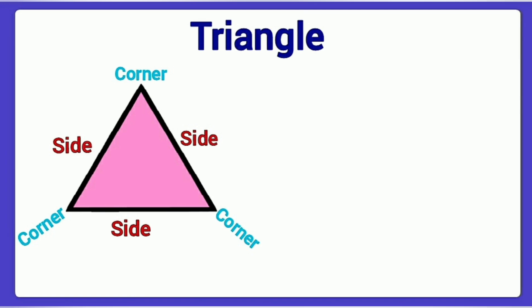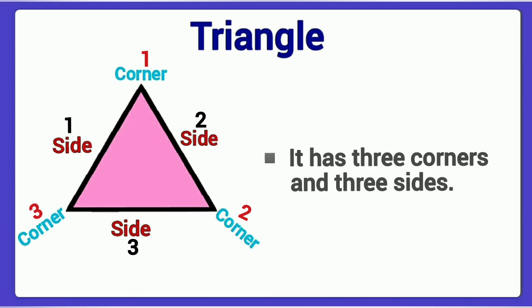Next one, triangle. Look at this picture and count how many sides are there. 1, 2, 3. Three sides. And how many corners? 1, 2, 3 corners. So the triangle has three corners and three sides.